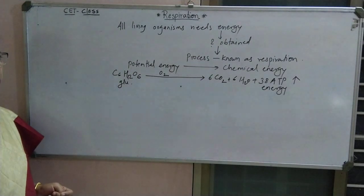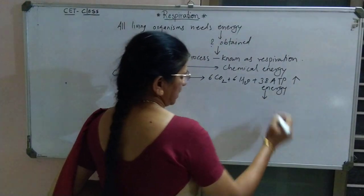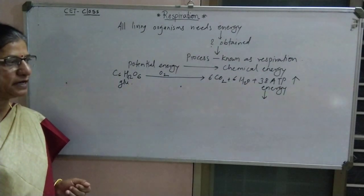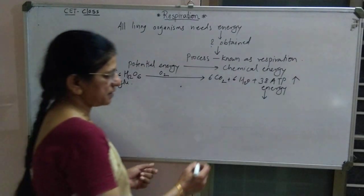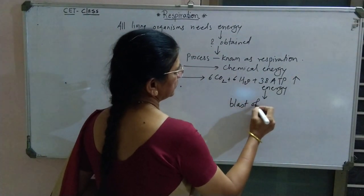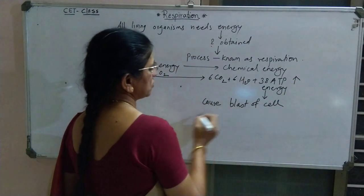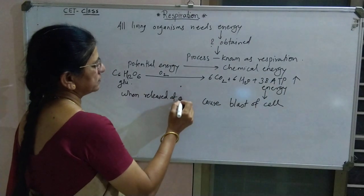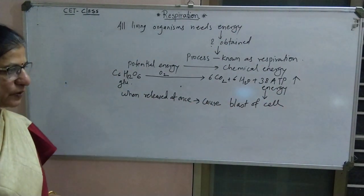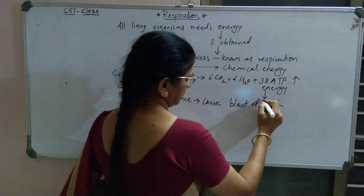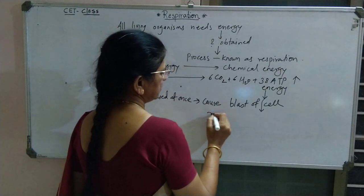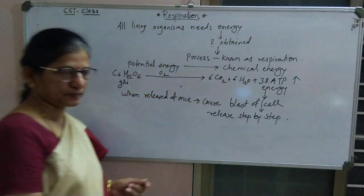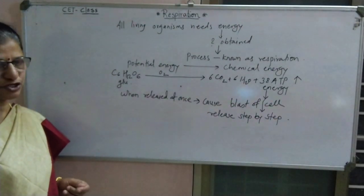Now, this release of energy is not expressed all at once. Why? If it is released at once, this may cause a blast of cells. Hence, this energy release is step by step, slowly. How does the cell release this energy?